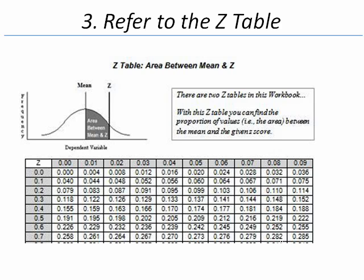There are two z-tables at the back of the workbook. The one that we're interested in says the area between the mean and z, because we want to find out what is this area equal to. The z-table is set up so that the leftmost column shows the z-score to the tenth place, and the top row shows the z-score to the hundredths place.